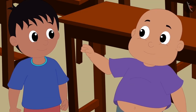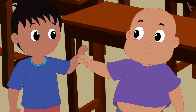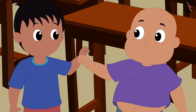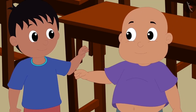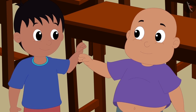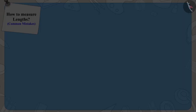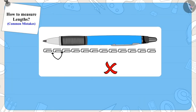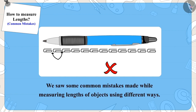Raju and Bablu were very happy to learn this from Appu and they became friends again. In this video we saw some common mistakes made while measuring lengths of objects using different ways.